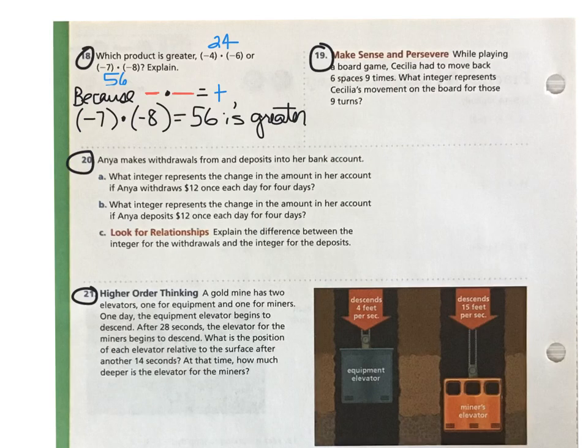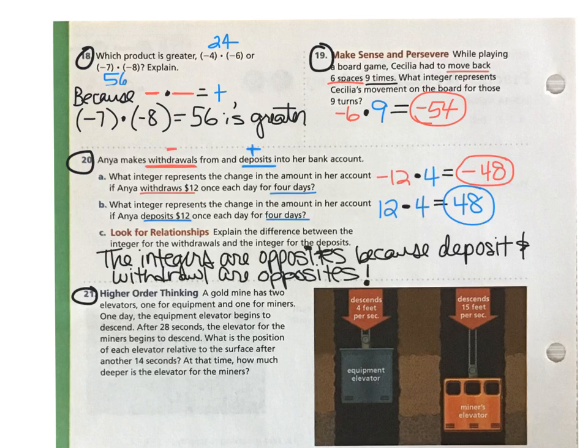Number 18. Because negative times negative equals positive, negative 7 times negative 8 equals 56 is the greater product. Number 19. Because Cecilia had to move back 6 bases on 9 different turns, then that means we're going to do negative 6 times 9 and get her position on the board as negative 54. Number 20. Remember that withdrawals and deposits mean putting money into an account or taking money out. So withdrawing is taking money out and depositing is putting money in. So we use positive and negative numbers to describe that. Check your answer to number 20.